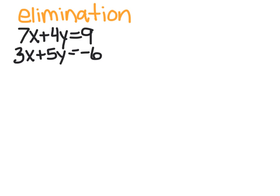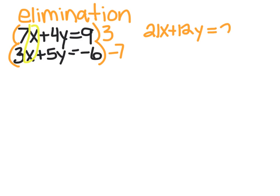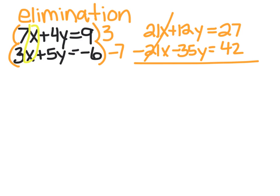And now for elimination — you take your two equations and you pick a variable to eliminate. In this case, we'll eliminate x. So then you multiply each equation by whatever you need to make the x's cancel out. I'm going to multiply this equation by 3 to get 21x, and multiply this one by negative 7, so that I have negative 21x. So now I'm going to have 21x plus 12y equals 27 — you have to do it to everything. And then down here I have negative 21x.